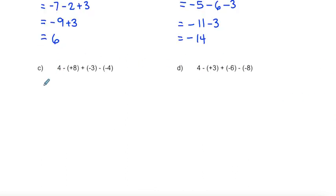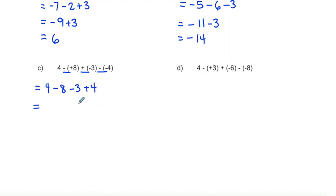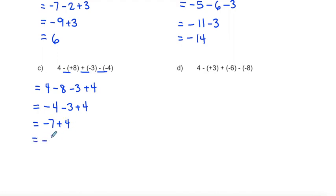The last two examples — first, eliminate extra signs. Starting with four: a negative and positive make negative eight; a positive and negative make negative three; a negative and negative make positive four. Going left to right: four take away eight is negative four; negative four take away three is negative seven; and negative seven plus four is negative three.